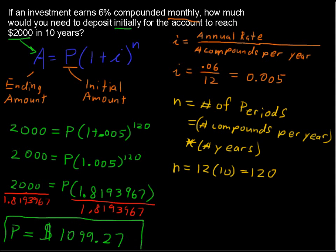So if you put in $1,099.27, and it's compounded monthly at 6% in 10 years, you'll have $2,000.